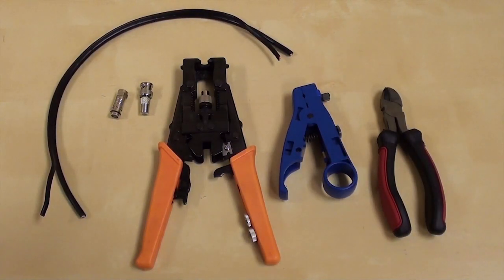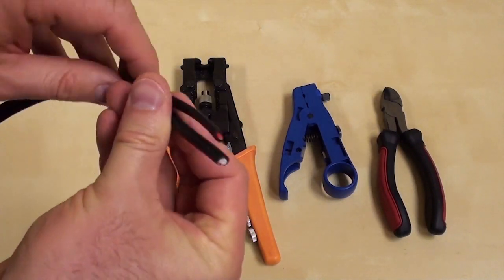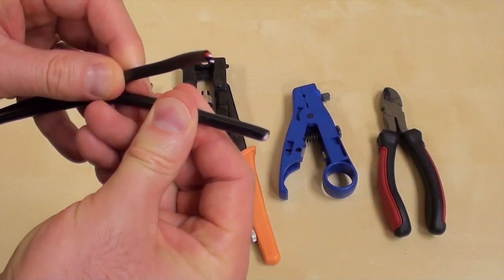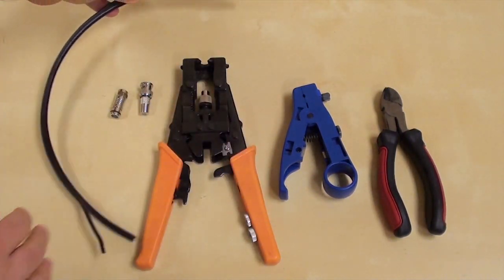On our bench, we have all the supplies that will be used. First, we have a piece of RG-59 Siamese coax cable. This is the industry standard cable used in CCTV camera installations.